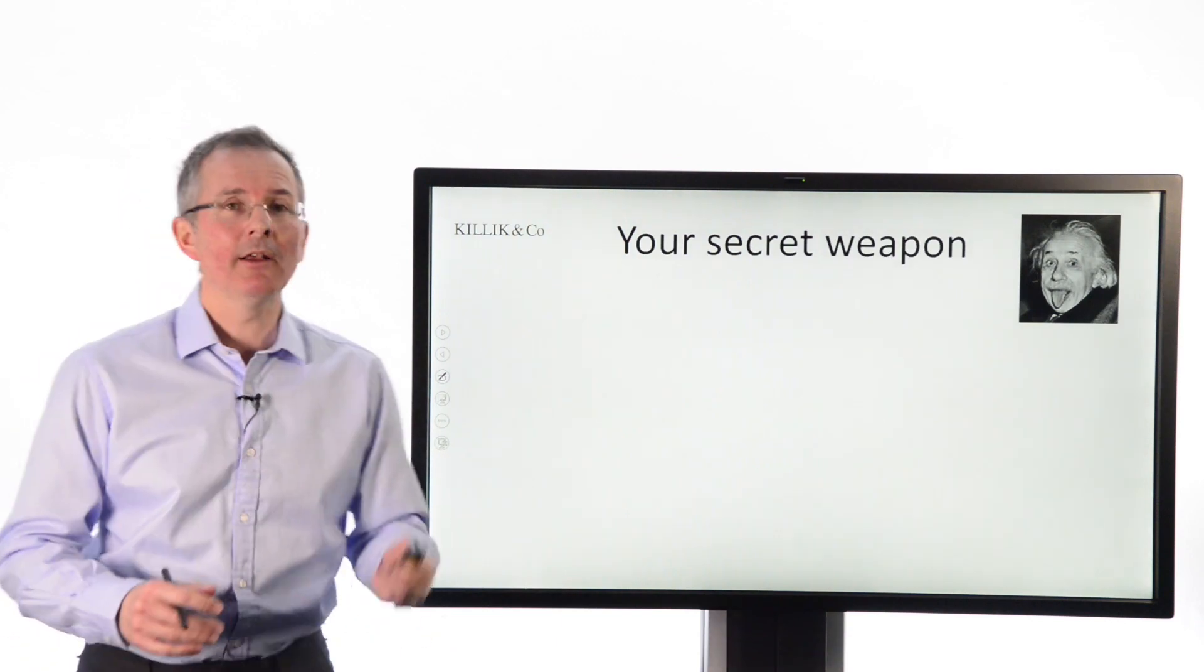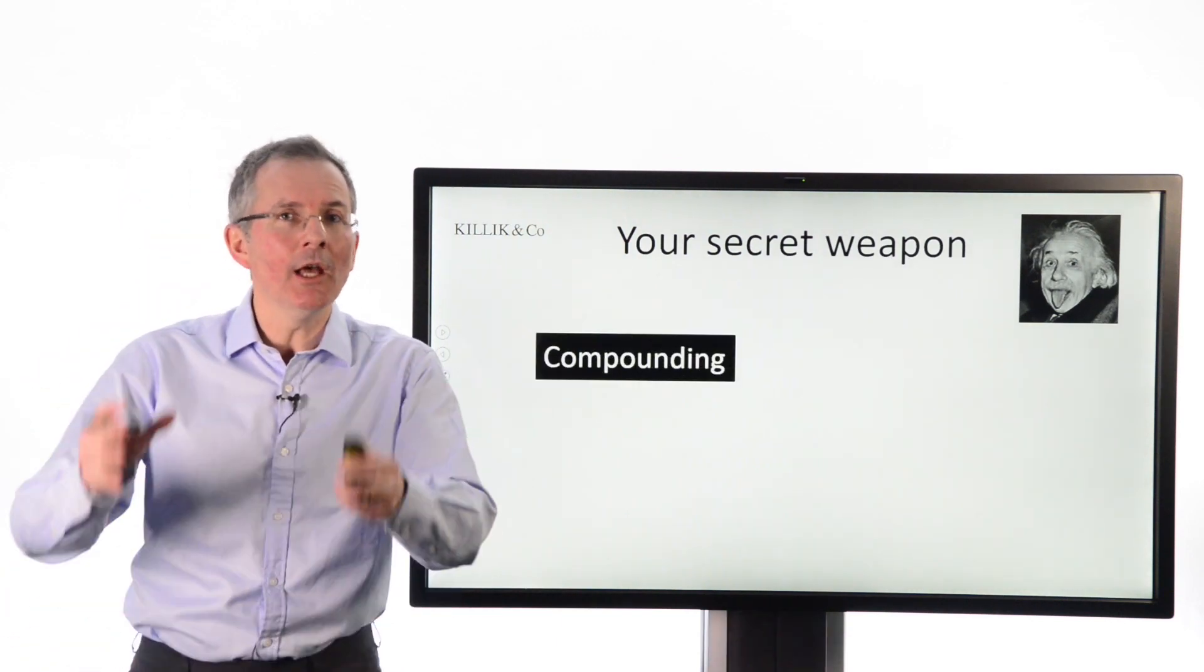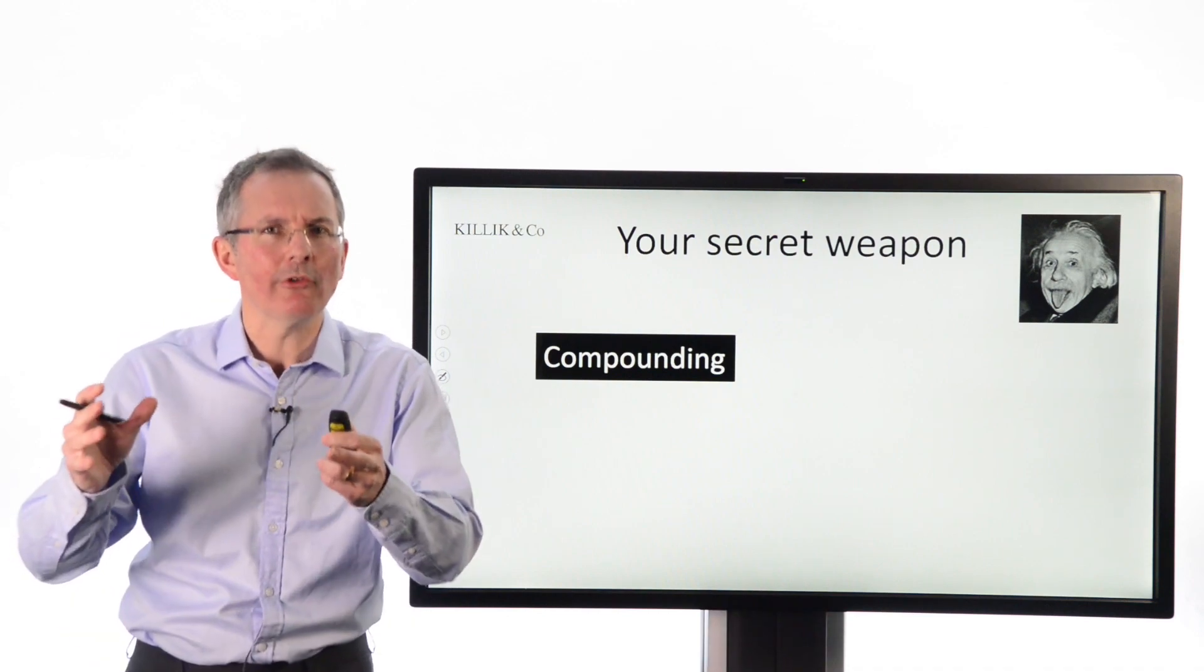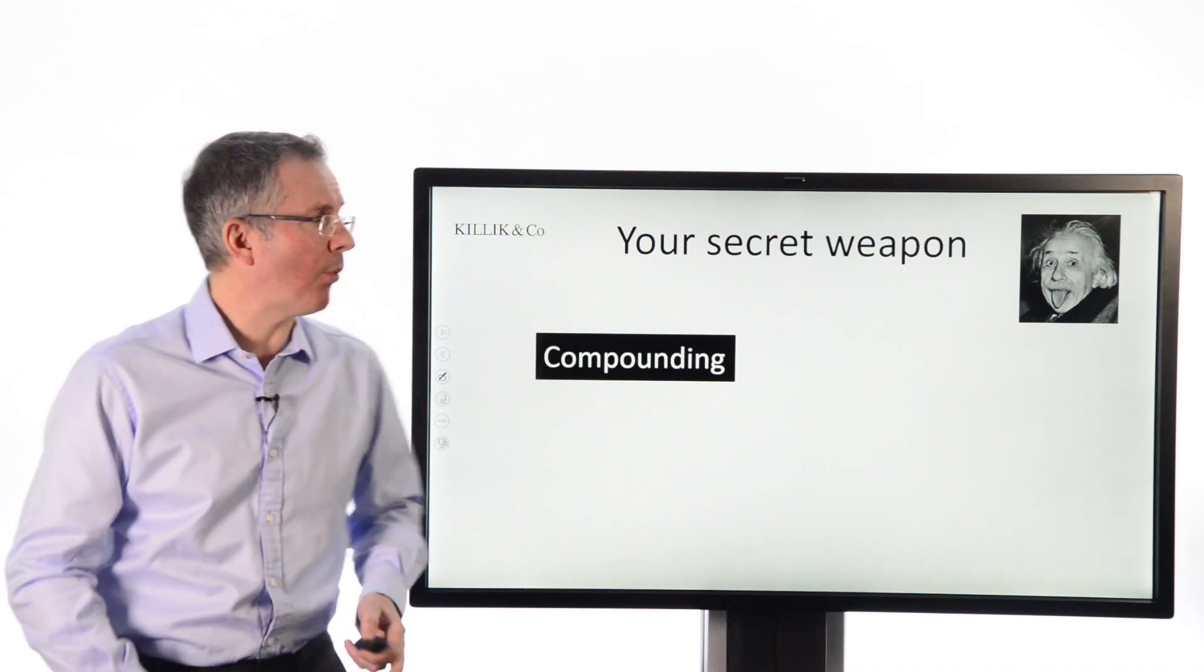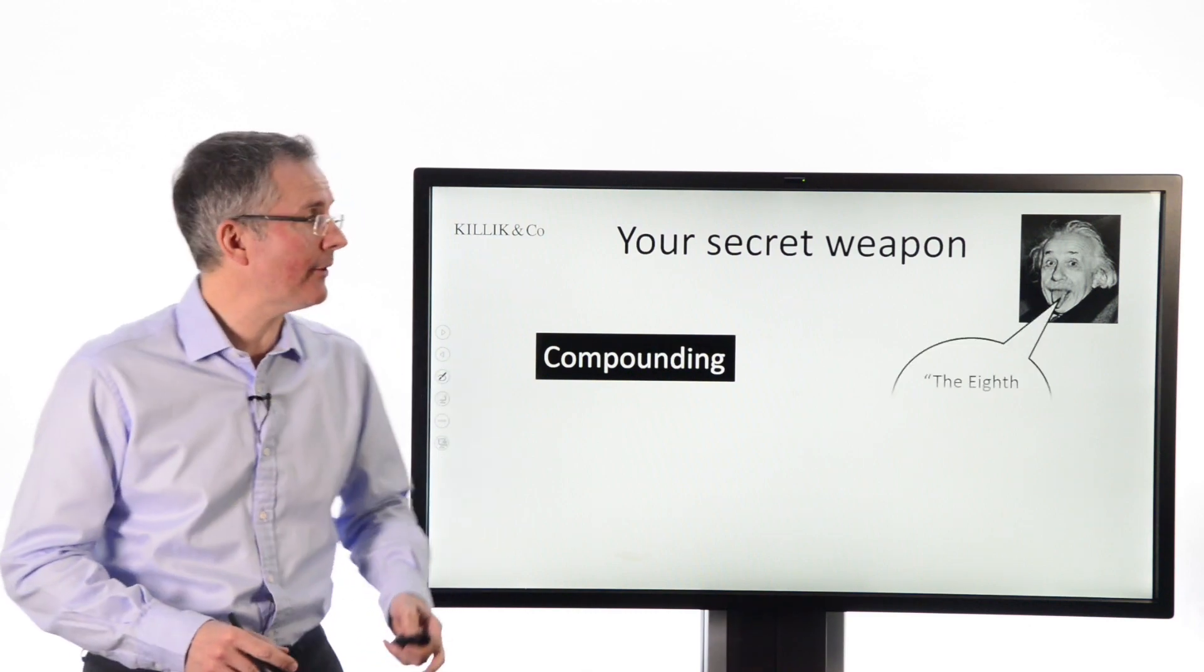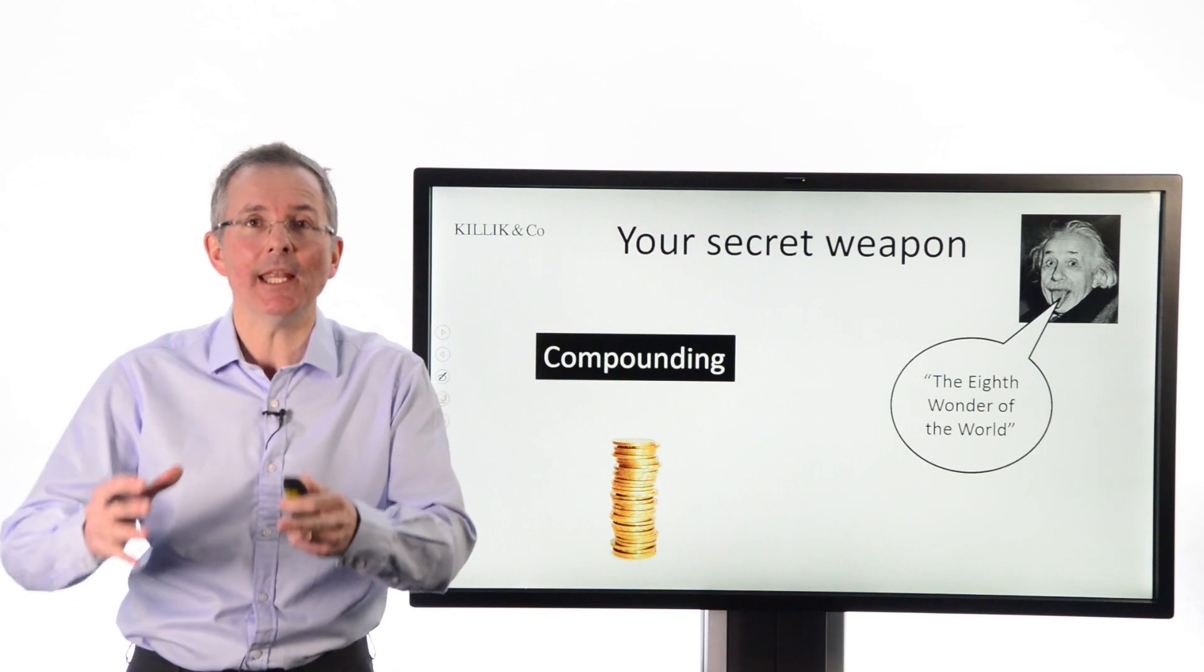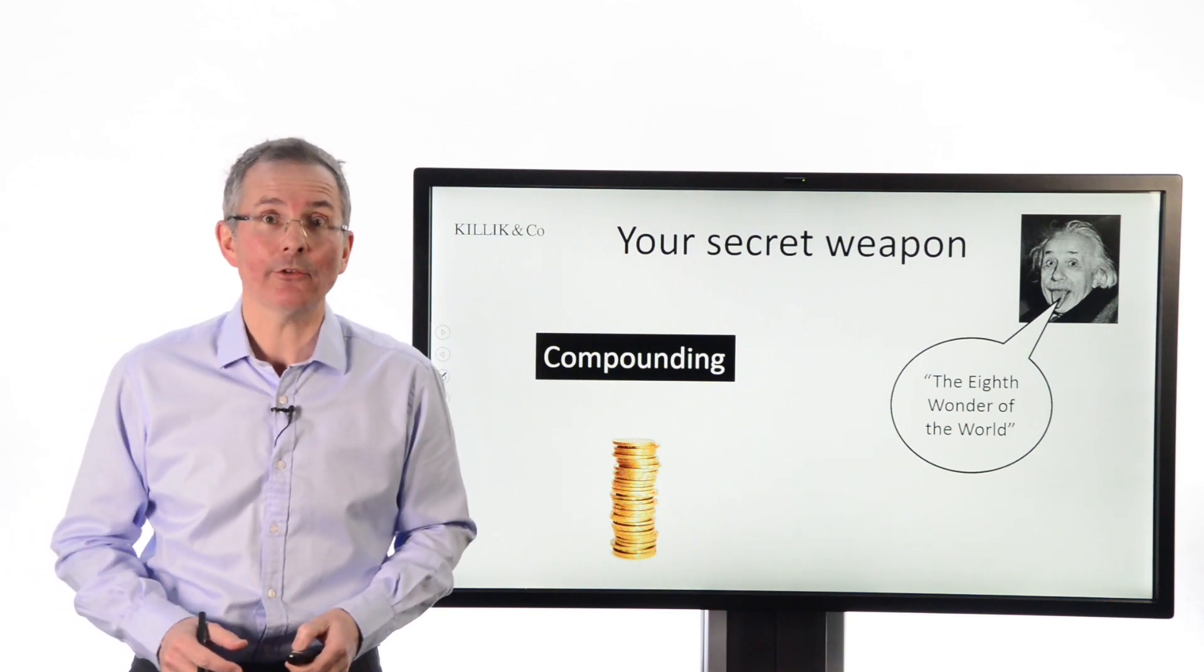Remember something I've covered before in other videos, the awesome power of compounding. You have a friend when it comes to long-term investing. You don't have many, but you do have one. It's called compounding, and supposedly Albert Einstein, no less, called it the eighth wonder of the world. It's the ability to make money on money, and it's at the heart of what I'm about to say next.